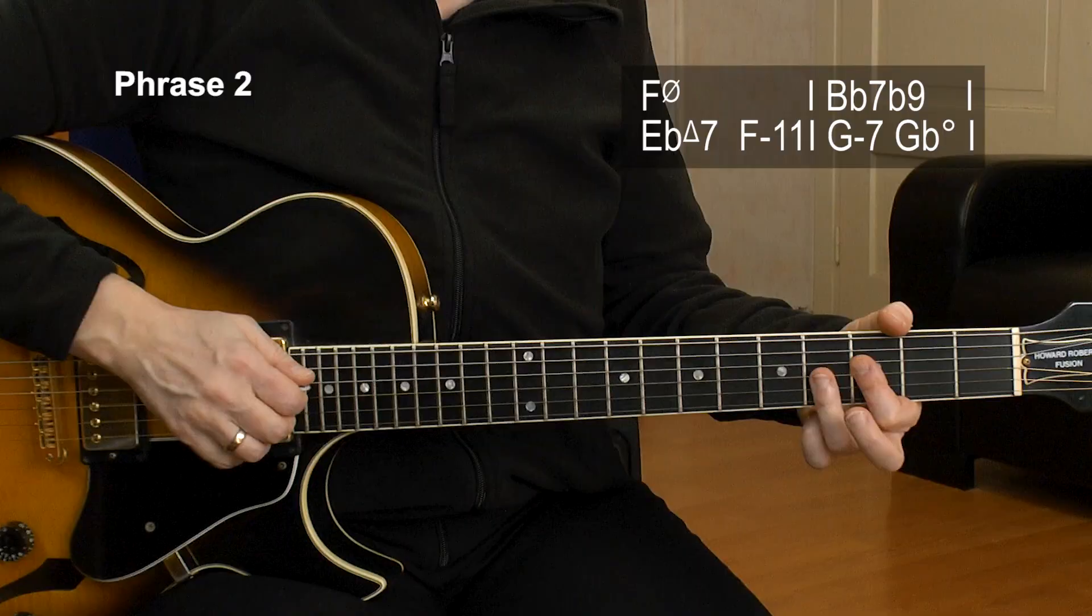All right, we now have a 2-5 in the key of E-flat minor, and we start with F half diminished. Same as G, but on the F. Three, four, four, fourth fret. All right, we play twice.